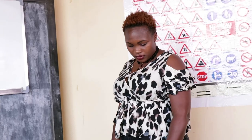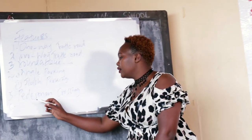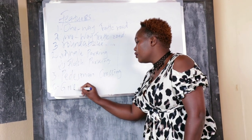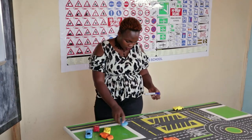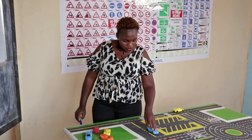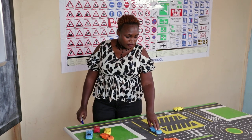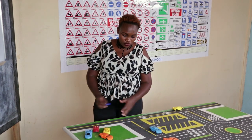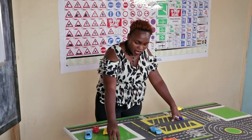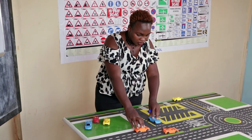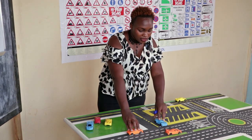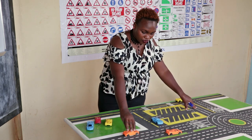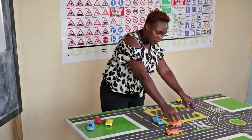Another feature that we have is a give way sign. You will find a give way sign in this table. For example, if you are coming from this side, you must stop and give way to the vehicles coming from the right.